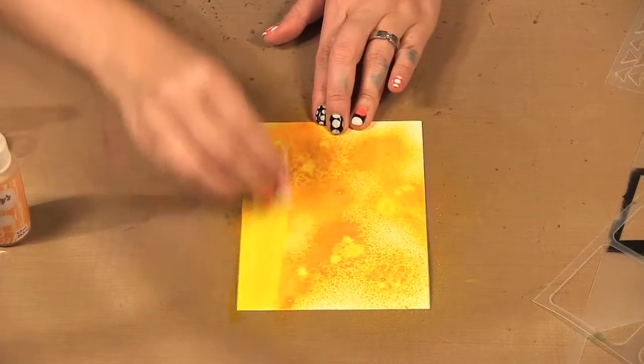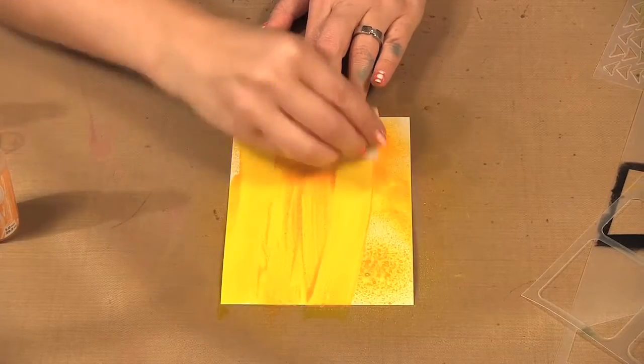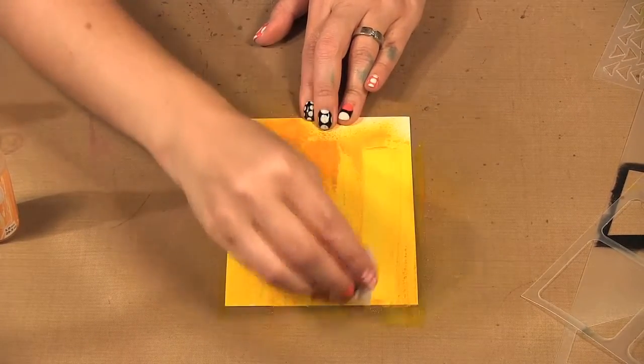So what I like to do is spray it on and then I get a little makeup sponge and just sort of even it out. I probably sprayed too much for the size of my project.